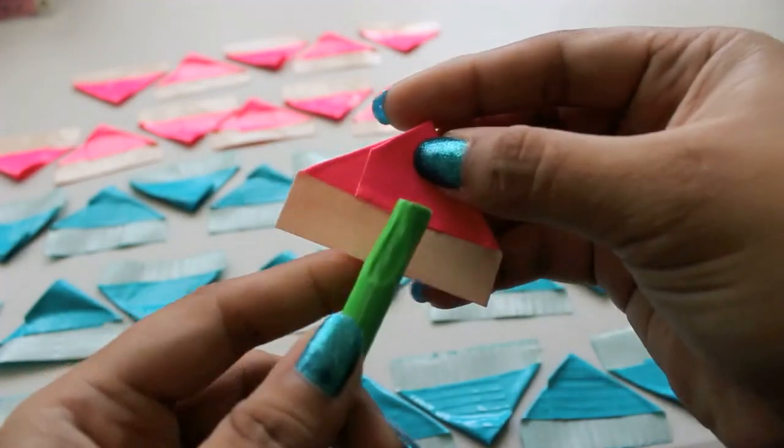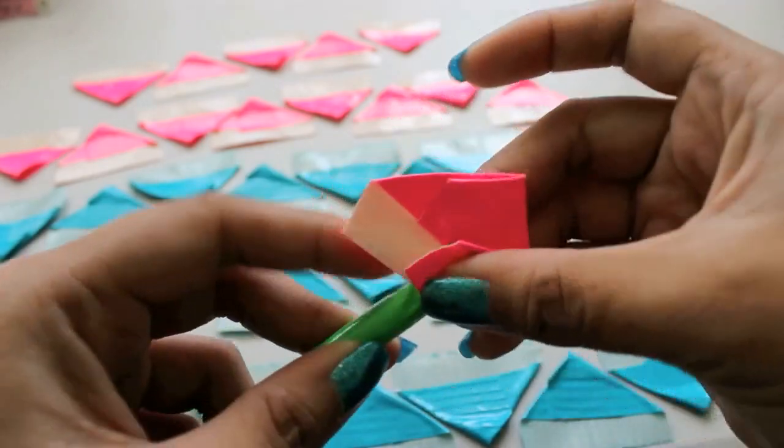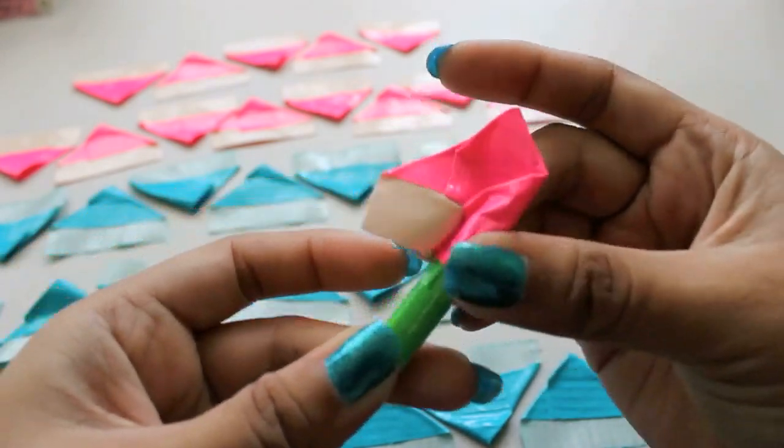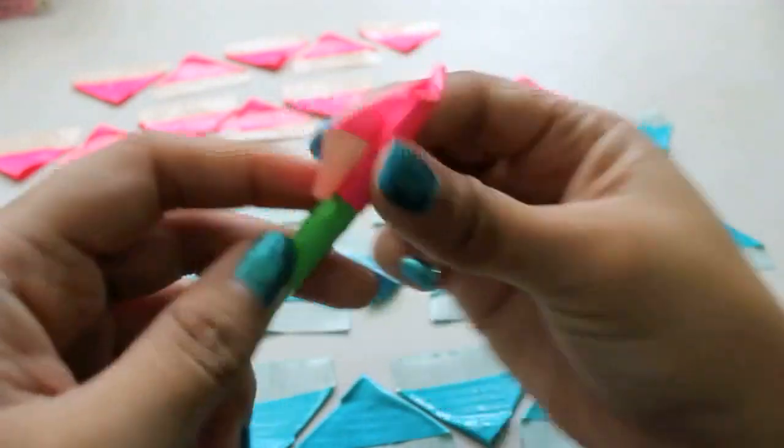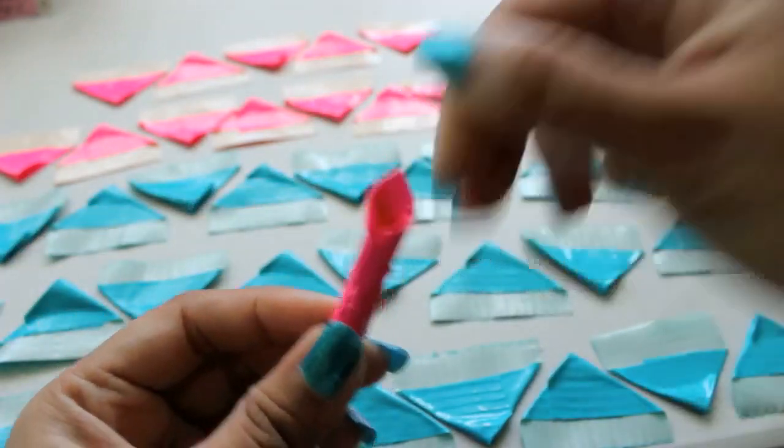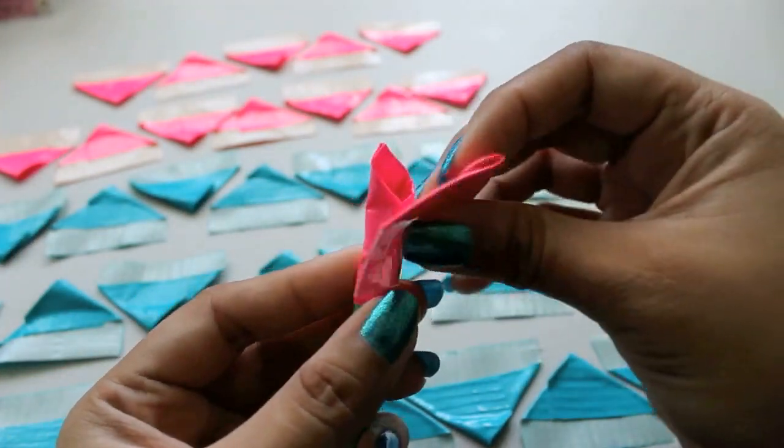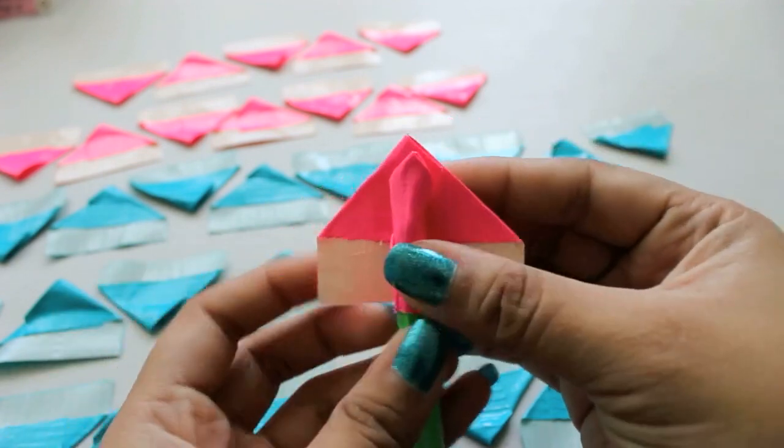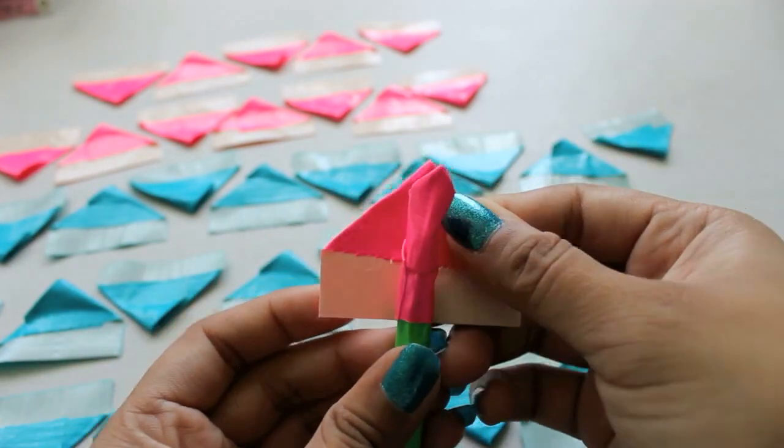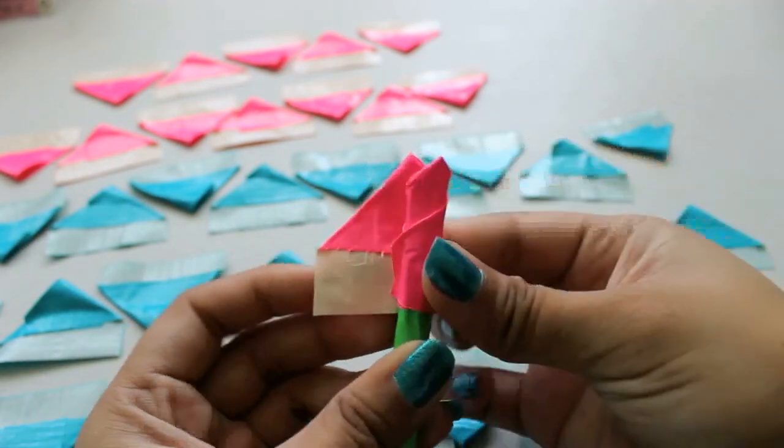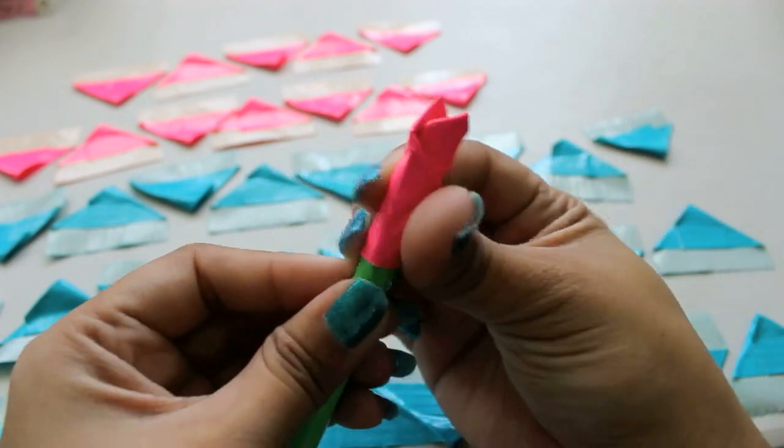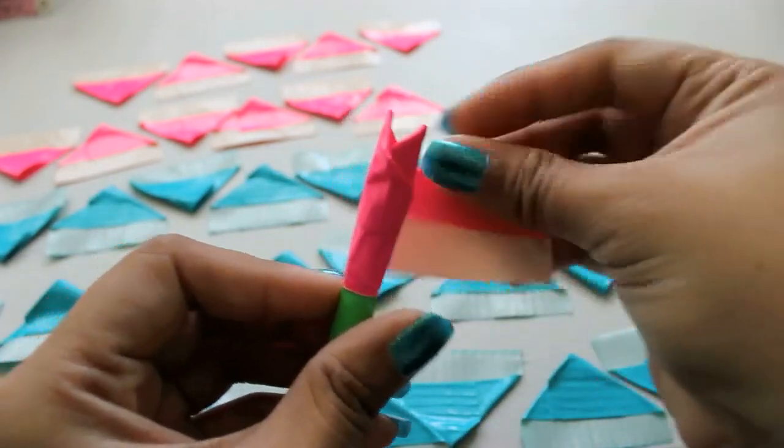Decide on which color is going to be on the inner part of your flower. At the base of your pen, start with a petal and fold it around.